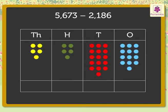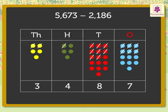Now, let us cancel 6 blue dots, 8 red dots, 1 green dot and 2 yellow dots. We are left with 7 blue, 8 red, 4 green and 3 yellow dots. So, we get in all 3 thousands, 4 hundreds, 8 tens and 7 ones which is equal to 3,487.